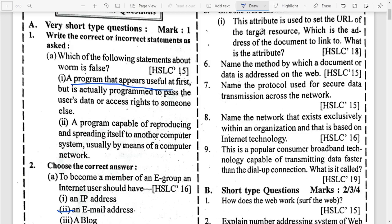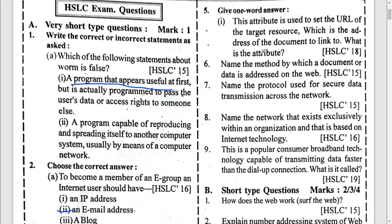Question five: the attribute used to set the URL of the target resource — which is the address of the document linked to — what is the attribute? It is the URL attribute. Question six: name the method by which a document or data is addressed on the web — it is URL.